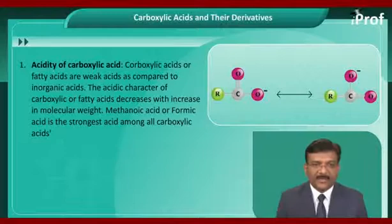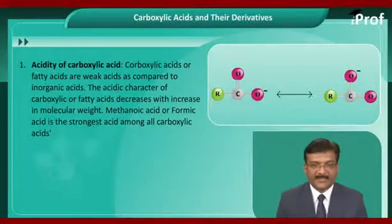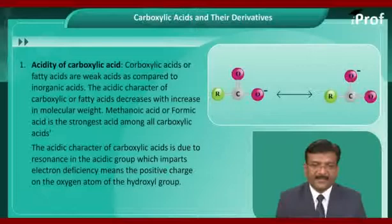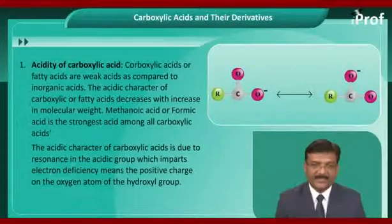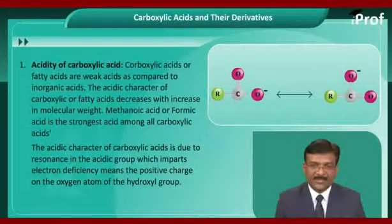Methanoic acid, or formic acid, is the strongest acid among all carboxylic acids. The acidic character of carboxylic acids is due to resonance in the acidic group, which imparts electron deficiency — that is, a rise in positive charge on the oxygen atom of the hydroxyl group.